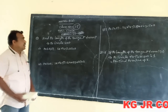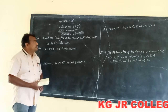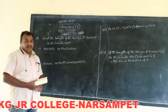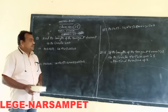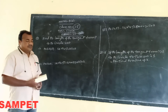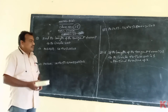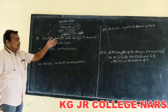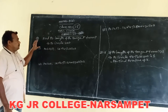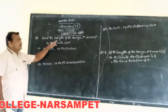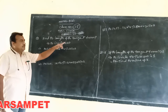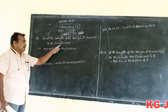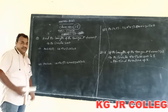Hello students. Now, class number 15. Here today we are going to solve the exercise problems. Now, the exercise for P, the third problem: find the length of the tangent from the point P to the given circle S equals 0.